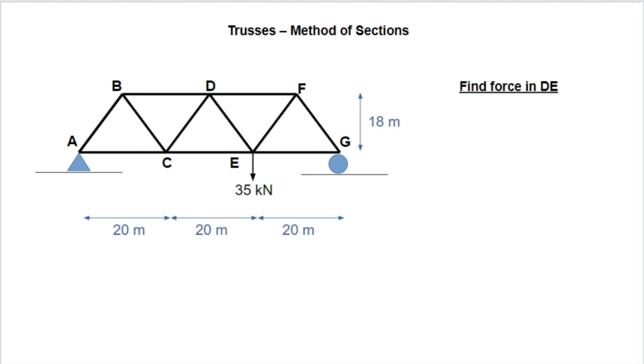In my experience, method of sections is the approach that is more often favorable for the problems that are given on the FE exam. It's also the approach that I find a lot of students have trouble with, so we'll review it and break it down into some steps here today. We're starting with this problem here, and we can see that we have a simple truss with two different supports and a point load applied at point E, and we're trying to find the force in the internal member between D and E.